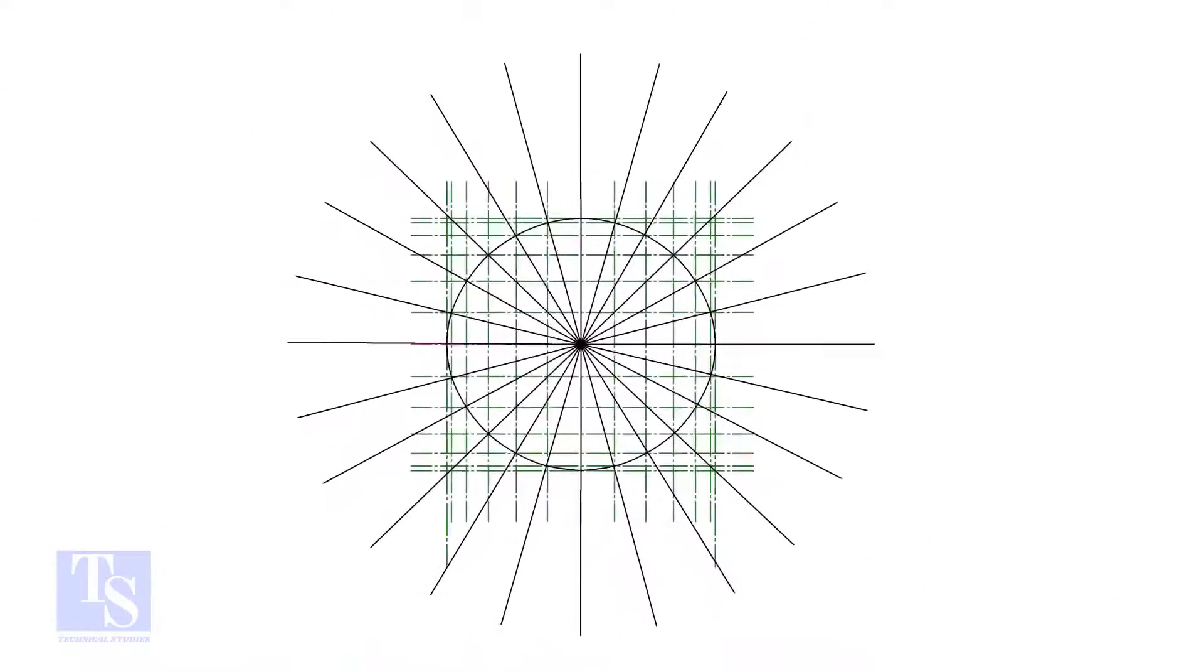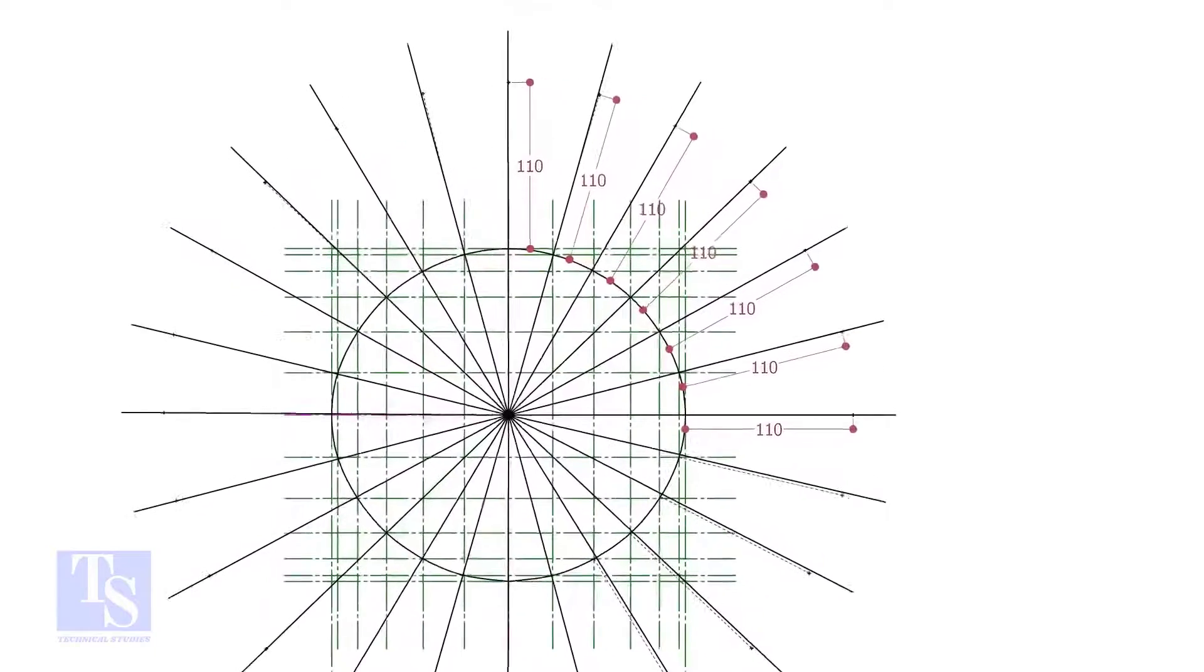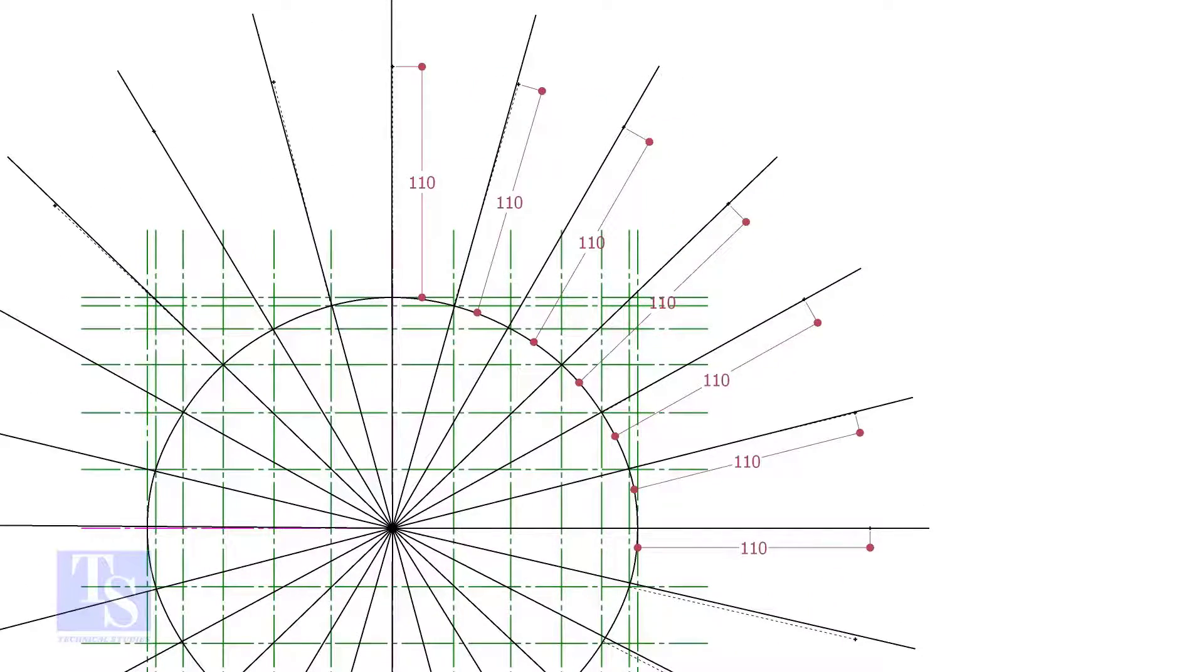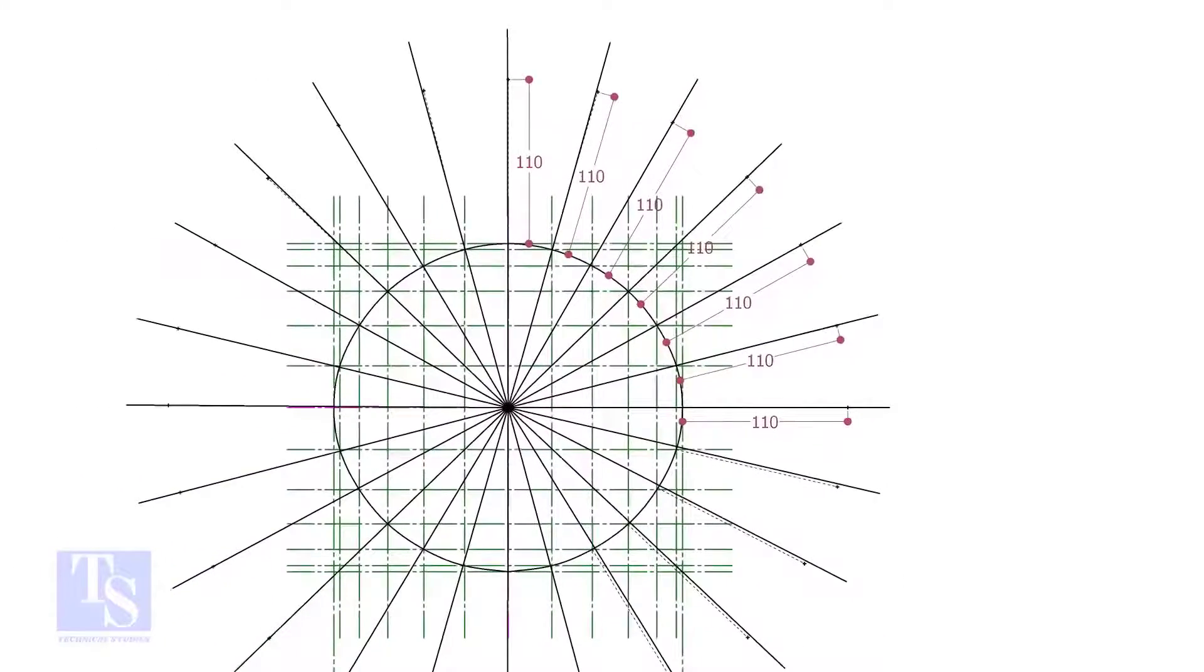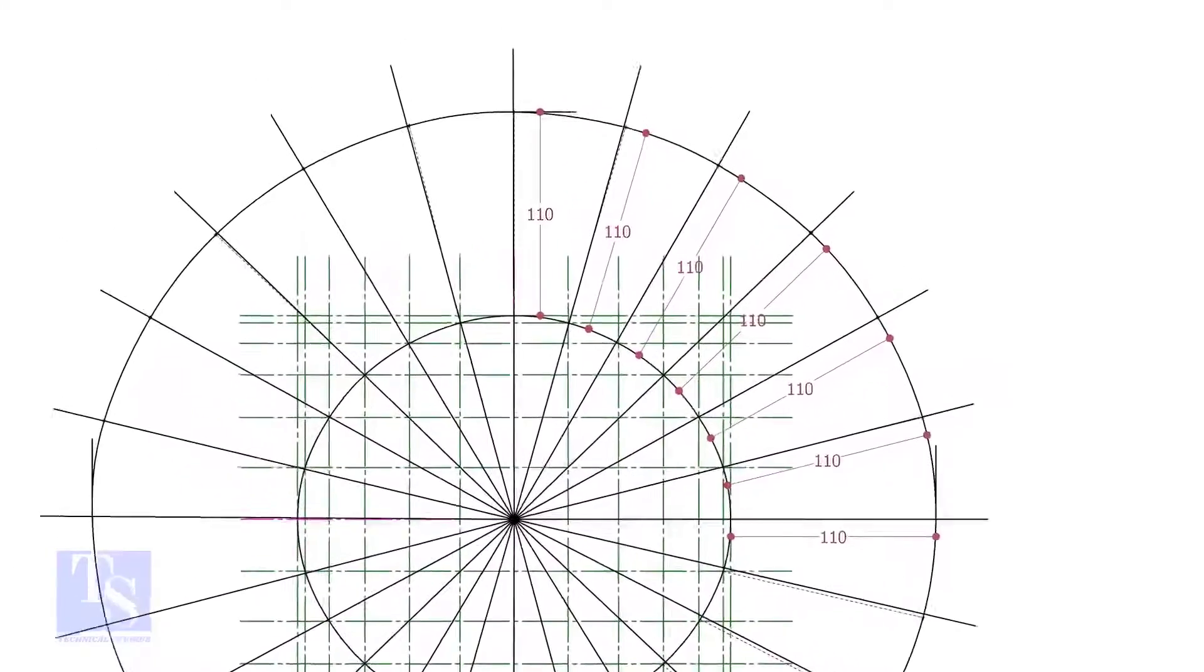Let us mark the width of the RF pad. To get a uniform width, draw tangential lines as shown. Mark 110mm, which is half the diameter of the branch pipe, all around the opening, as shown. Draw a smooth curve through these marks.